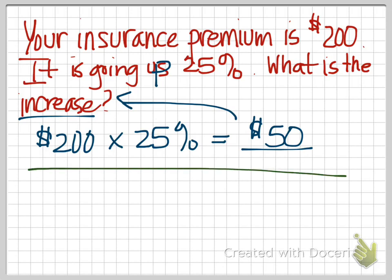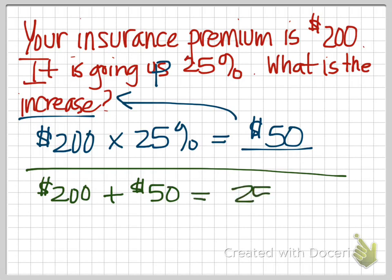Now, if they ask what is the resulting premium or what is our new premium going to be, then we would take the $200, add the increase of $50, and now we would know that we are going to have to pay $250 for our new insurance premium.